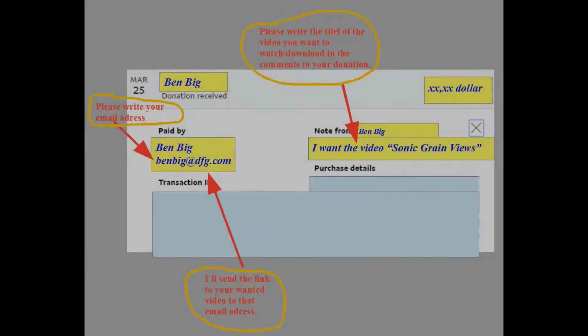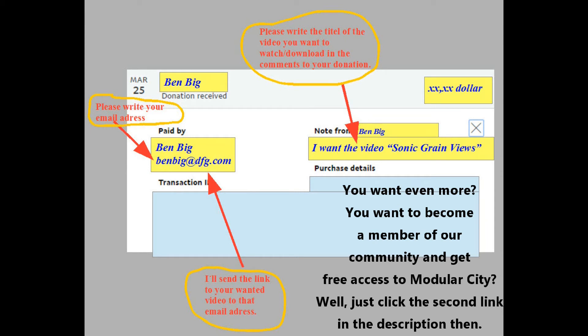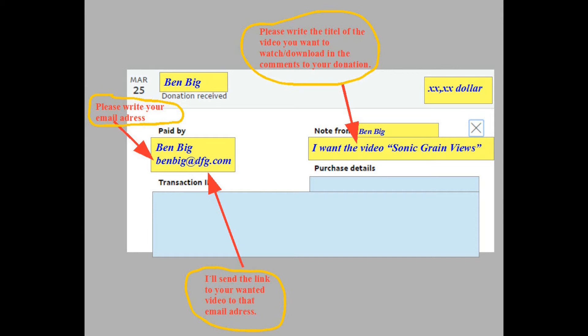Here is how you get it. First, you donate via PayPal an amount of your choice. Mention an email address you want the video link sent to, and write which video you want to view or download in the comments of your payment order. Second, PayPal sends your money, your email address, and the title of your wanted video to me.